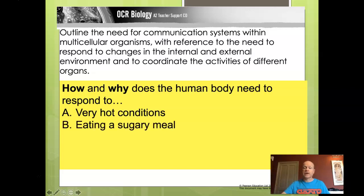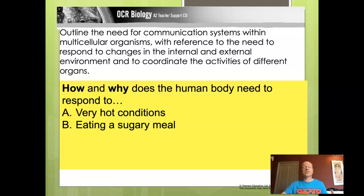Our second example is eating a sugary meal. This is an internal environment change. If you increase the blood glucose concentration in the body, you're going to be affecting osmosis — specifically the water potential of cells. If glucose builds up outside a cell, water might move out of the cell towards where there is more glucose, causing problems. To prevent that, glucose is usually stored as a large molecule, glycogen, which is insoluble and therefore doesn't have an osmotic effect. Glucose levels are regulated hormonally: we produce insulin from the pancreas, which causes glucose to be stored as glycogen in the liver, removing that glucose.